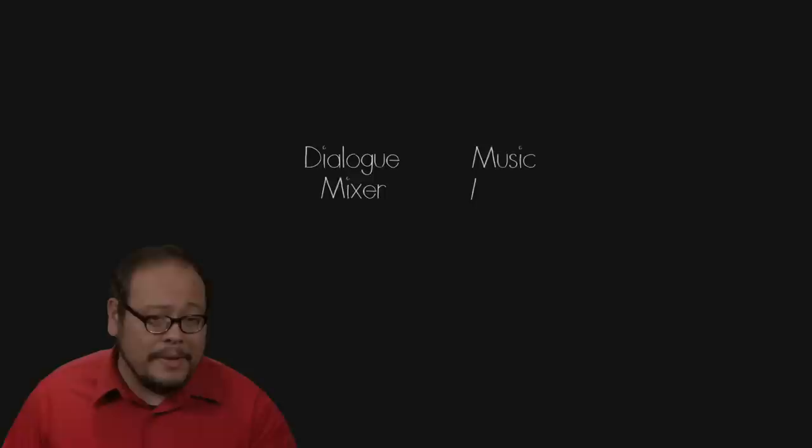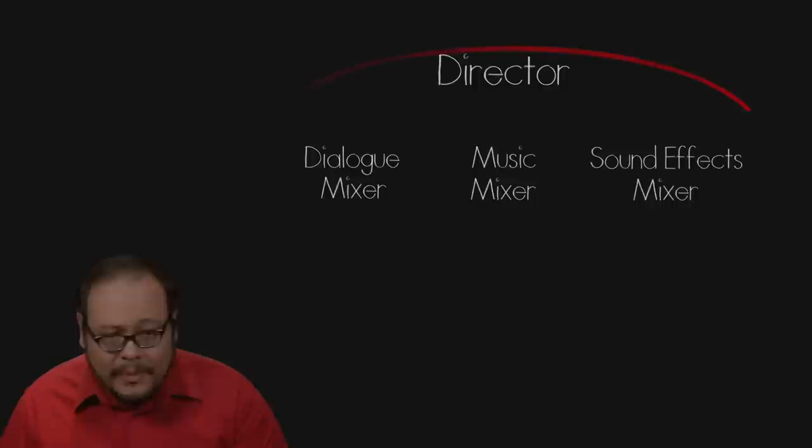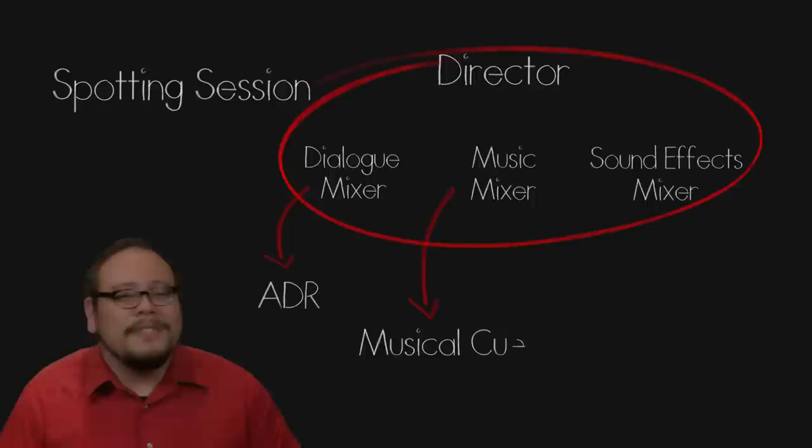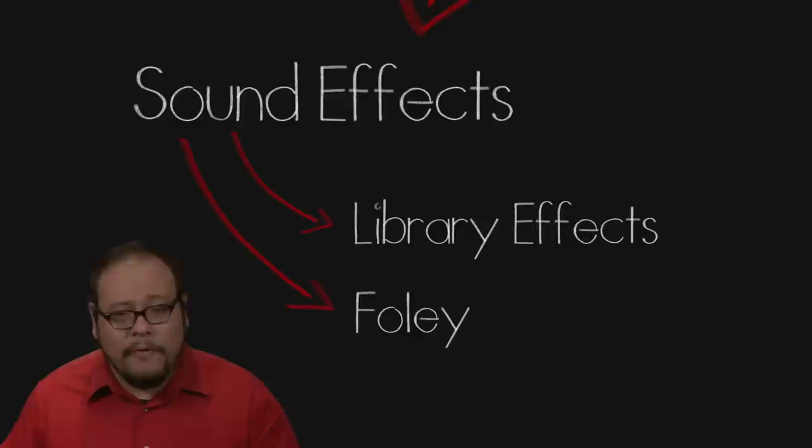Traditionally on a studio film, the sound duties are divided among three different mixing specialties: a dialogue mixer, a music mixer, and a sound effects mixer. Everyone would sit together with the director and do a spotting session — that is, look at the film and figure out what parts need to be ADR'd, what parts need musical cues, and what sound effects are required. From this spotting session, the sound effects mixer can determine where library sound effects can be used and what needs to be done with Foley.